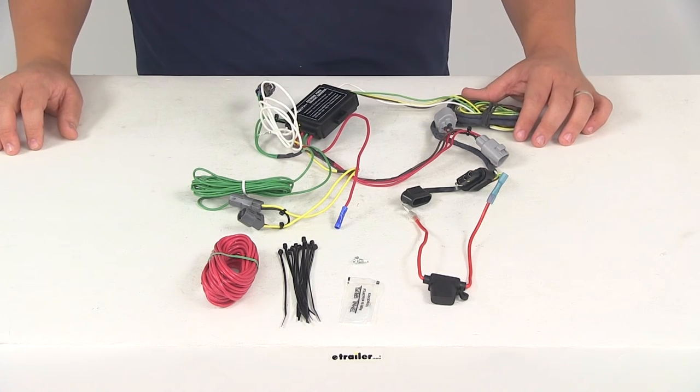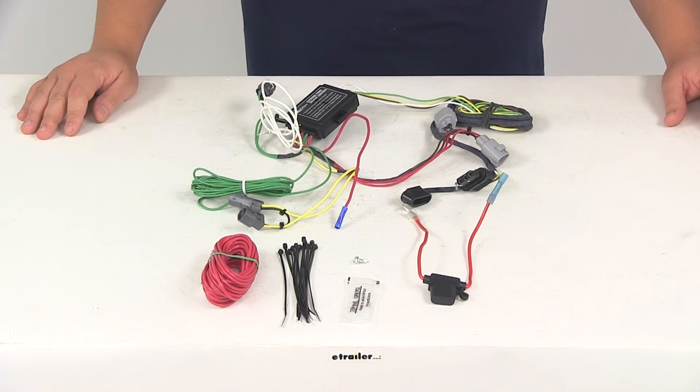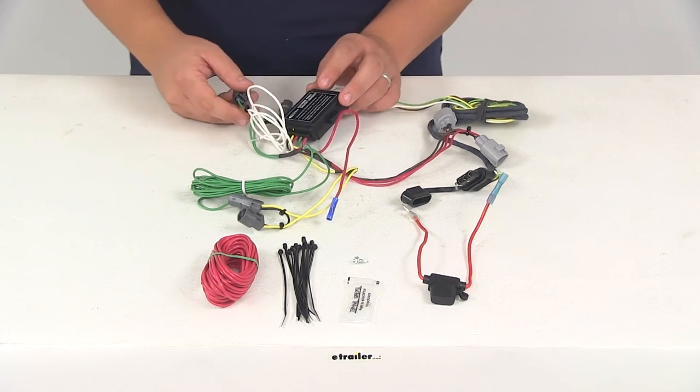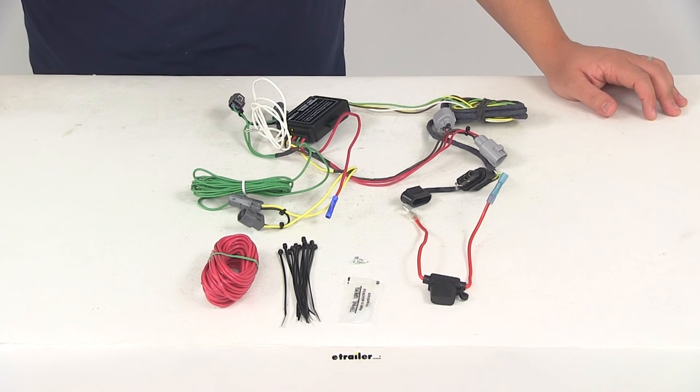Now, when it comes to the maximum amperage for the stop and turn lights, we're looking at 3 amps per circuit, and for the tail lights, we're looking at 6 amps per circuit. That's going to do it for today's review of part number HM-111-43690.